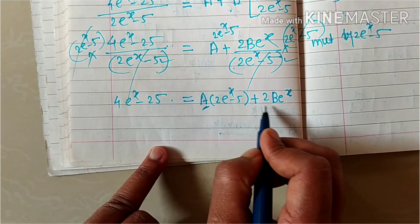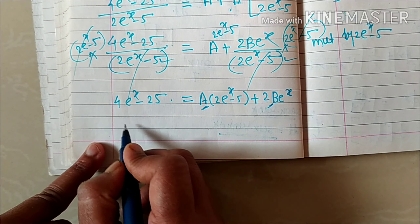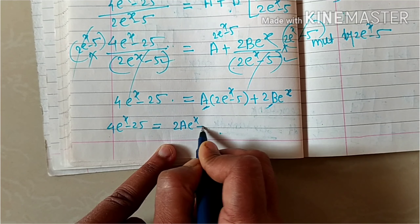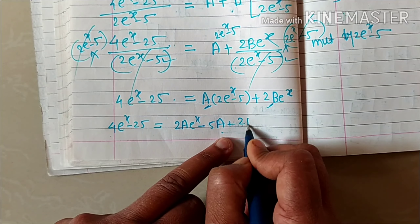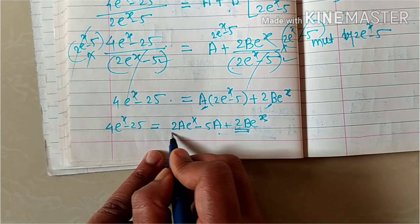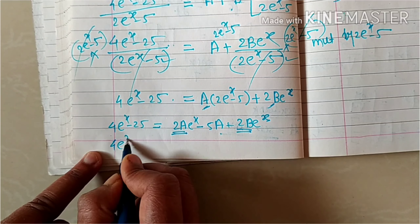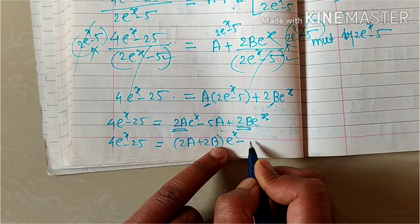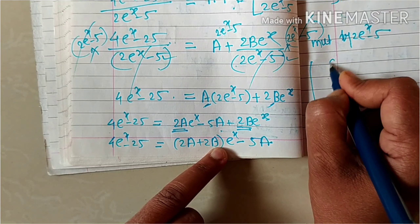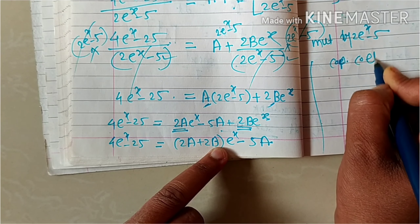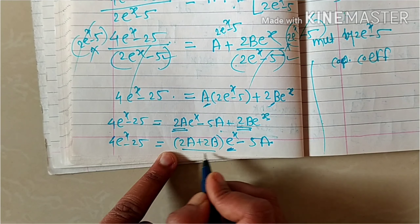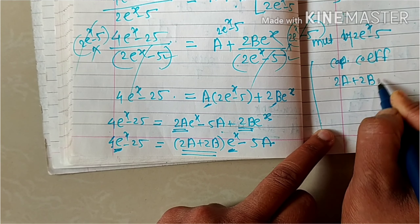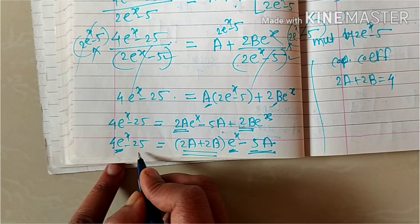To find the values of a and b, we compare coefficients. On the left: 4e^x minus 25. On the right: 2a·e^x minus 5a plus 2b·e^x, which combines to (2a plus 2b)e^x minus 5a. Comparing the coefficient of e^x: 2a plus 2b equals 4.